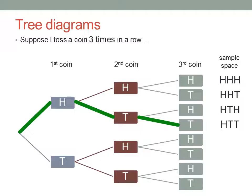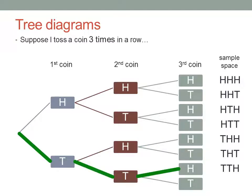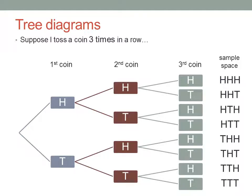We're halfway. Keep working systematically through the tree. A tail, then a head, then a head. A tail, then a head, then a tail. A tail, then a tail, then a head. And finally, a tail, then a tail, then a tail. And there's my sample space — eight possible outcomes.